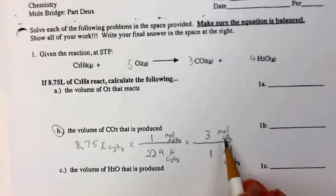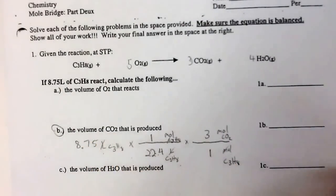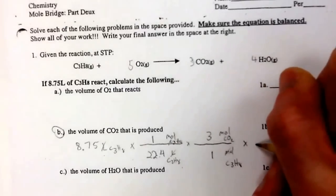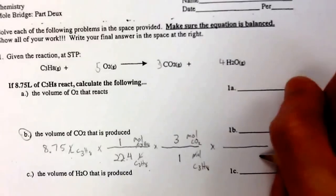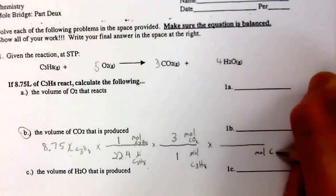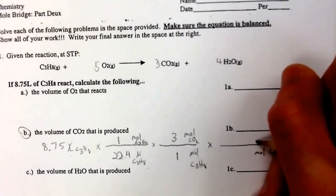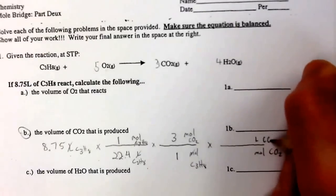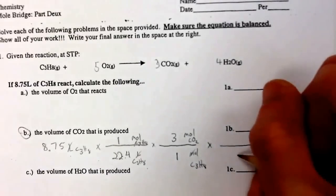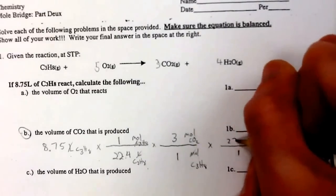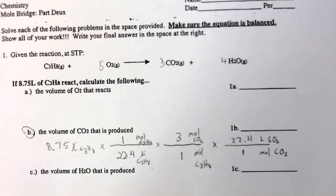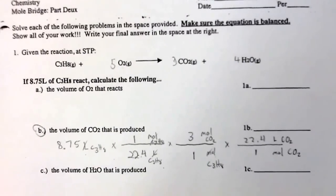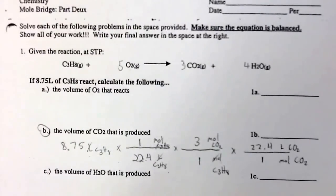Now I have moles of CO2. I need to get to volume of CO2. So I do another times goes into, drop my label. I'm going to the liters of CO2, and it's the exact same numbers. 1 mole equals 22.4 liters. So this is your setup for 1B.